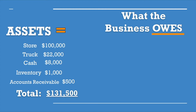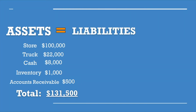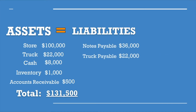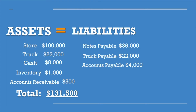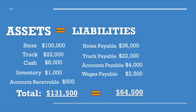Now on the other side we have what we owe, or another name for it — liabilities. To get our business off the ground we needed a little funding from the bank. For startup costs you owe the bank $36,000 — we call that notes payable. We also took out a loan for our truck, called truck payable of $22,000. You owe one of your suppliers $4,000 for inventory — that's accounts payable. And you owe your employees $2,500 for wages, called wages payable. Each one ends in 'payable' — that is the key word for liabilities, because you will eventually pay it.